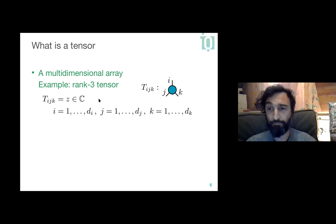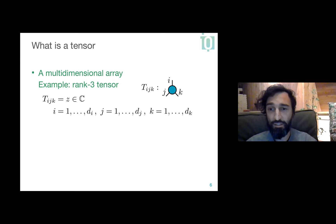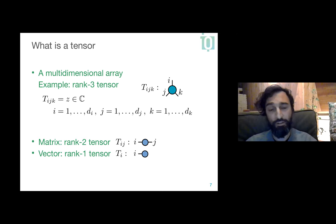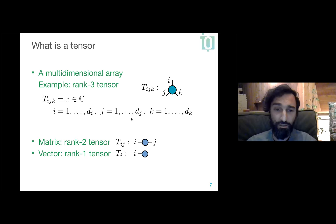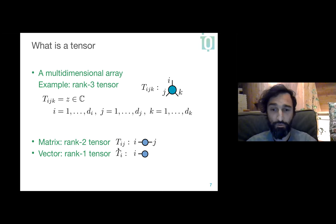We are more familiar with particular types of tensors: matrices and vectors. I can represent matrices and vectors similarly — a matrix T_ij has two free indices and is drawn as a two-legged blob, and a vector with one free index is drawn with one leg.